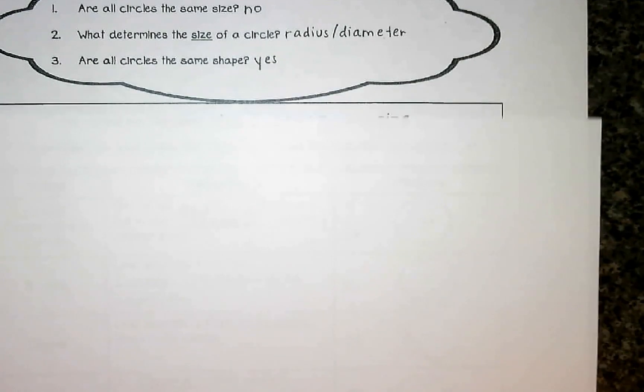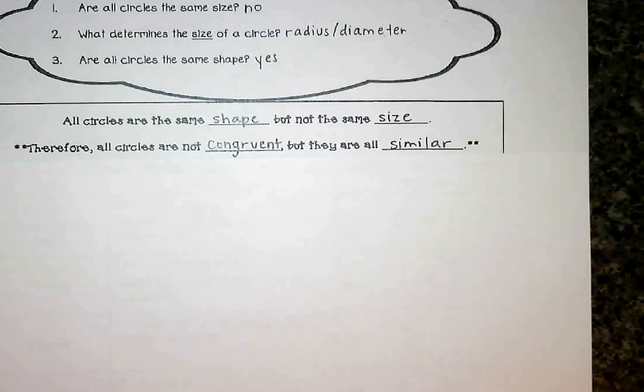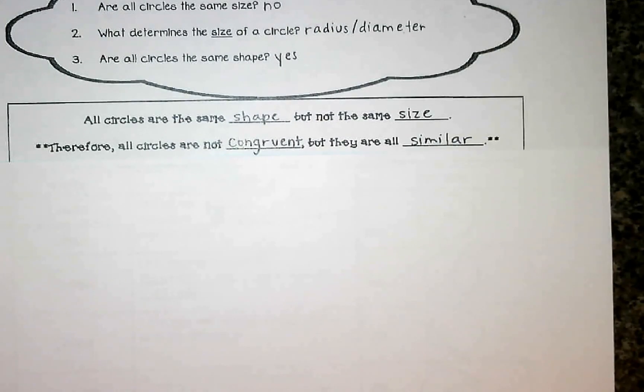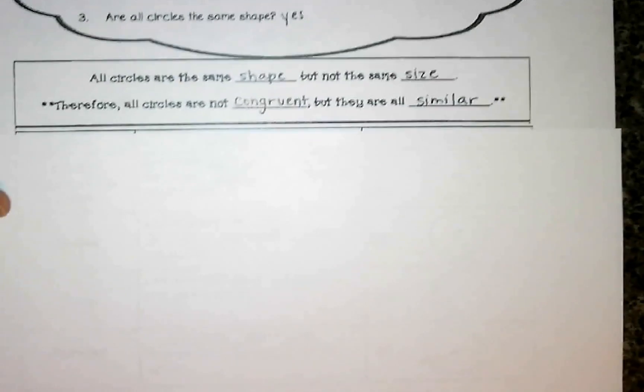But that leads to two, that all circles are the same shape, but they're different sizes. And when we look at that, if they're the same shape and different sizes, that means they are not congruent. If you remember from unit in the first semester, that any shapes that are congruent are both the same shape and the same size. But if they are the same shape and different sizes, then we call them similar. So circles would be considered similar to each other.